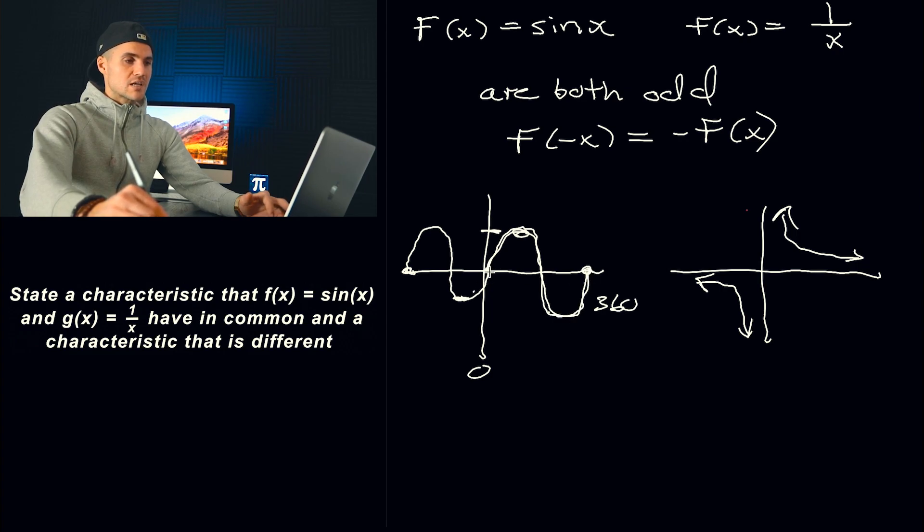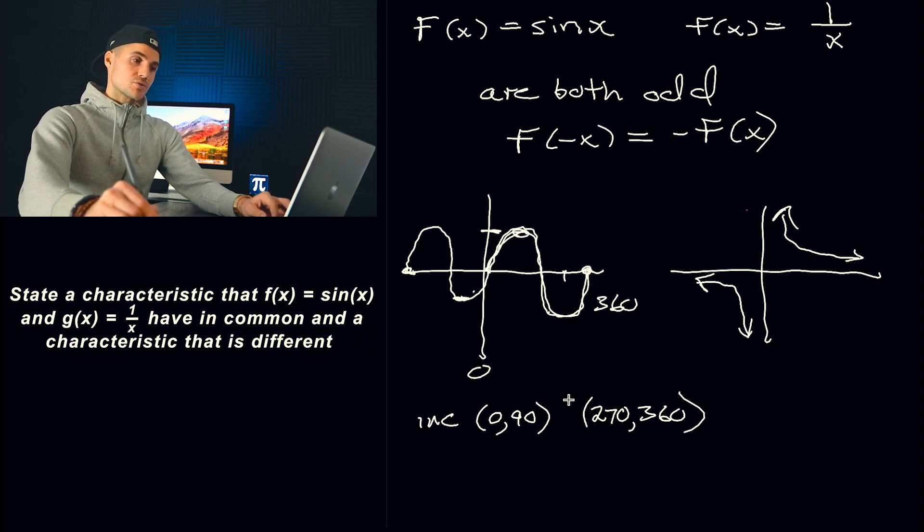Basically, notice that function's increasing from 0 to, let's actually write, so it's increasing from 0 to an x value of 90. Then it's also increasing from this x value of 270 to 360. And actually, later on in trig, we're also not going to be using degrees anymore like we did in grade 11. We're going to be using something called radians. But because we haven't learned that yet up until this point, I'm just writing these in degrees.